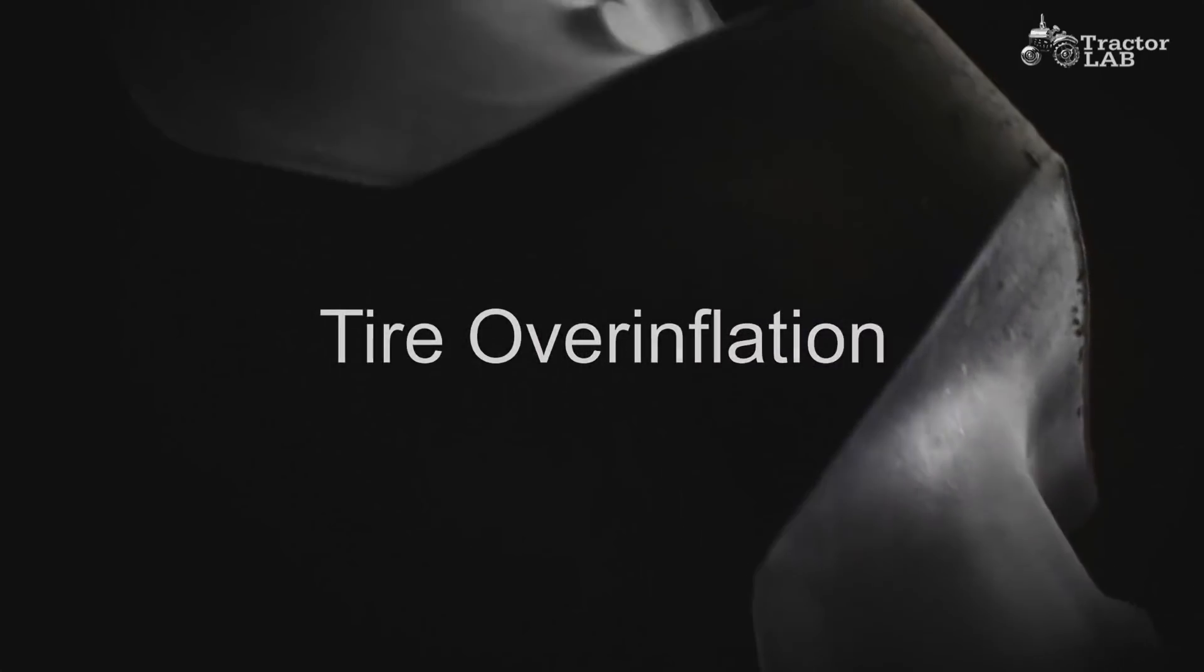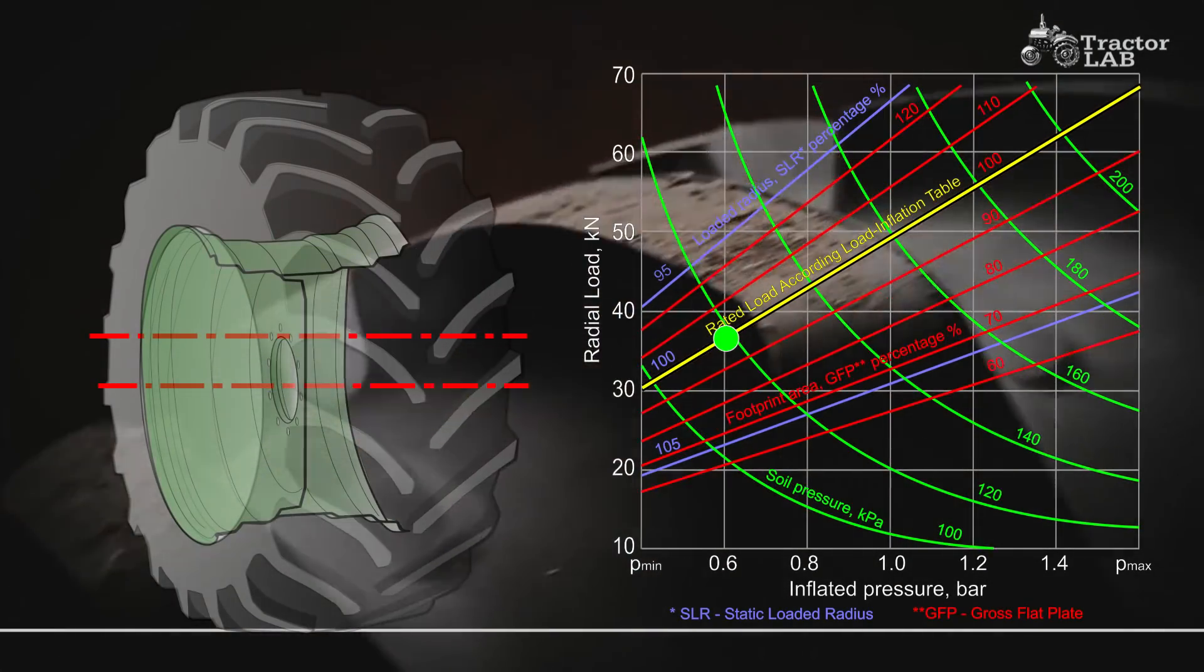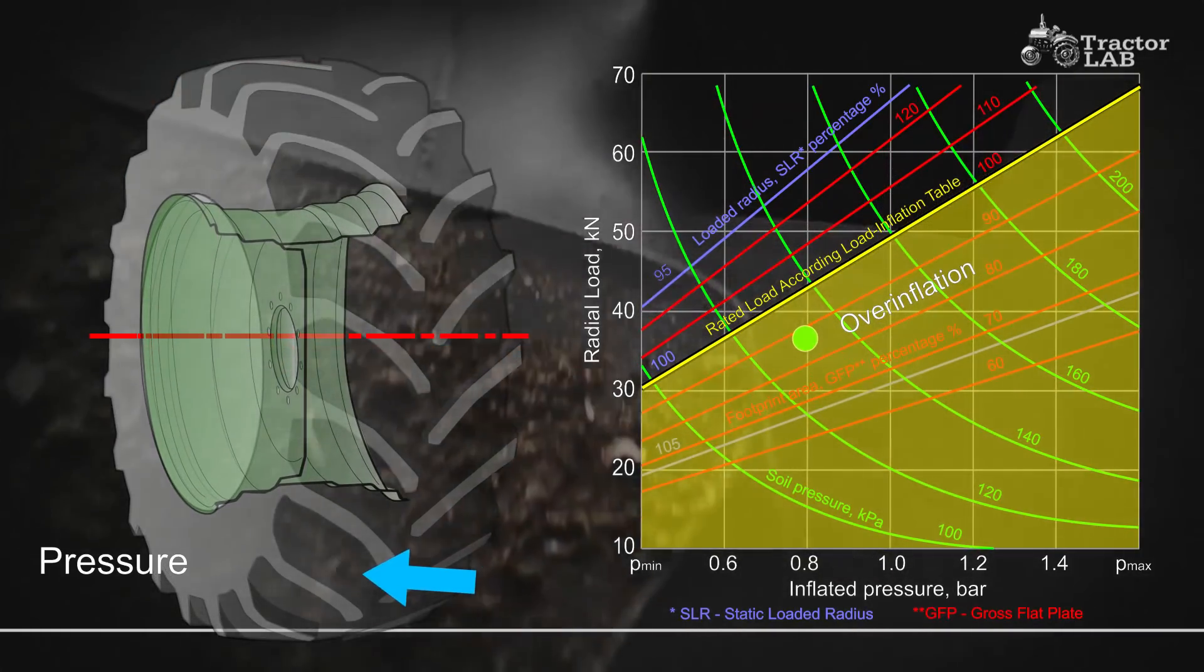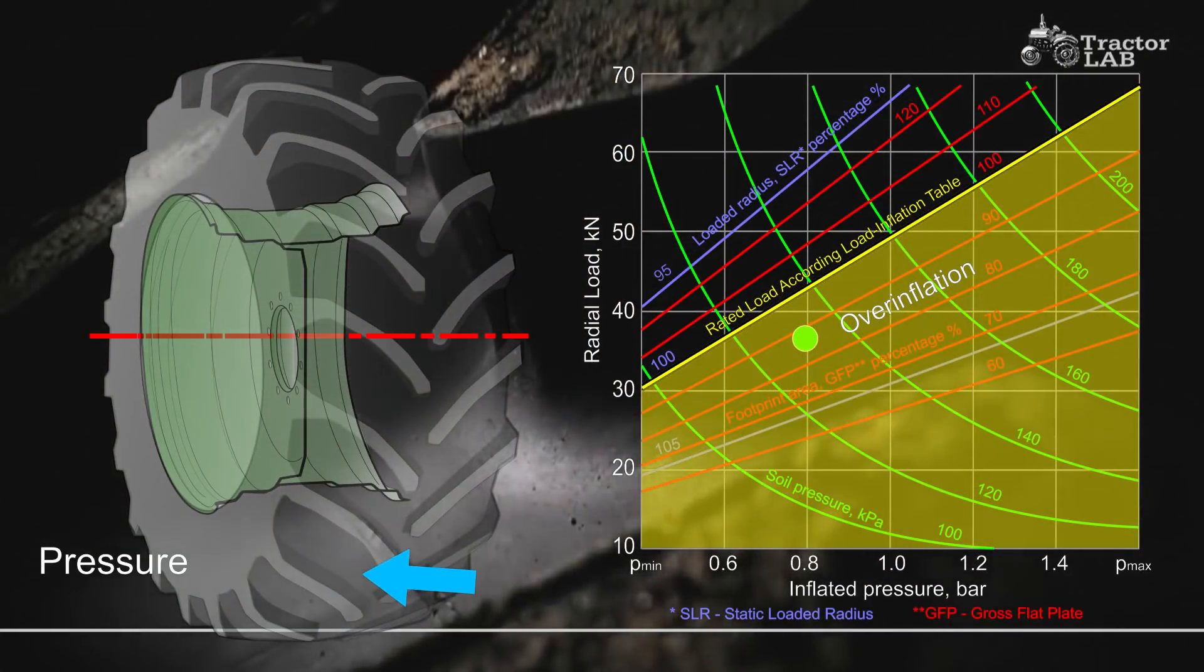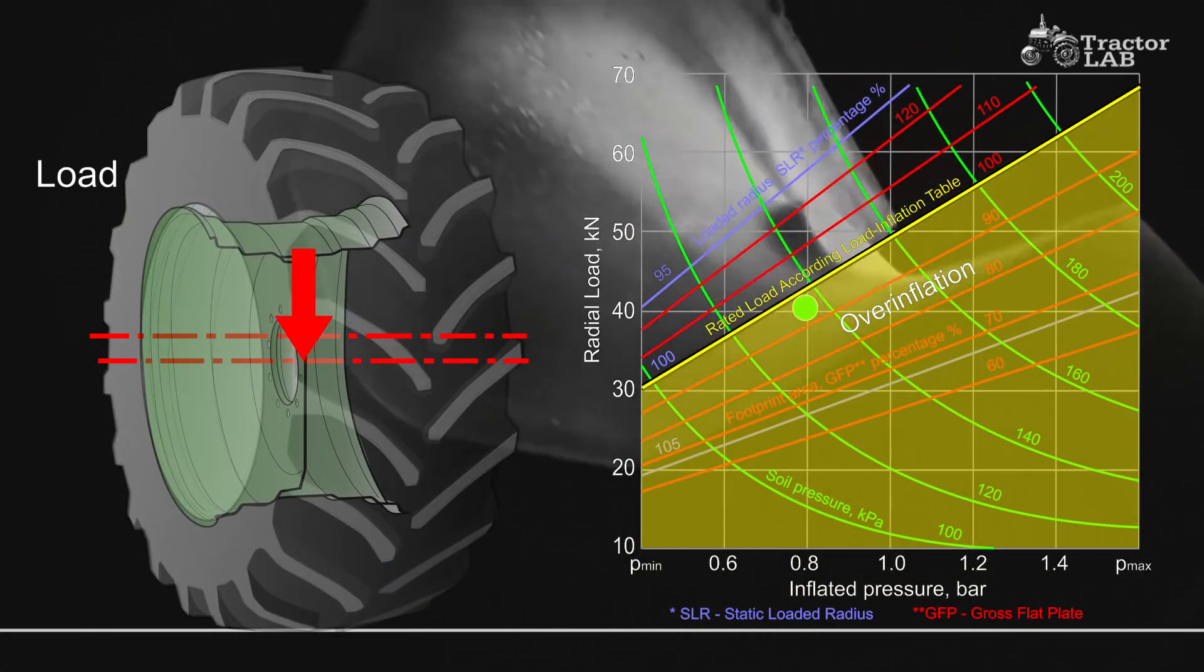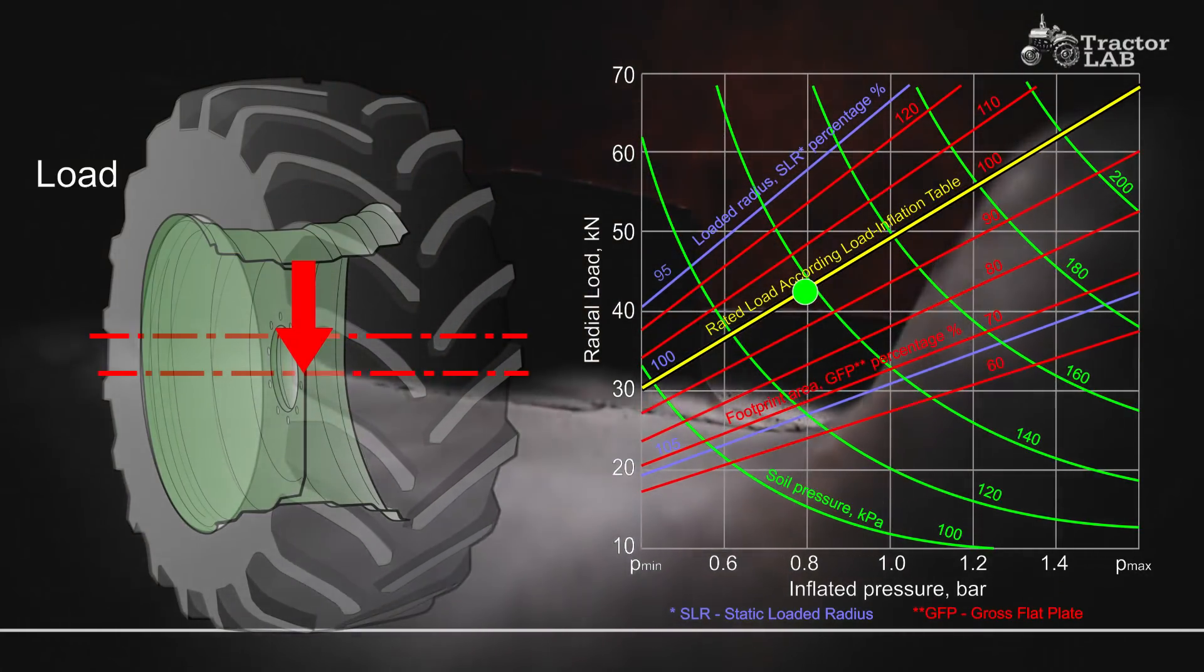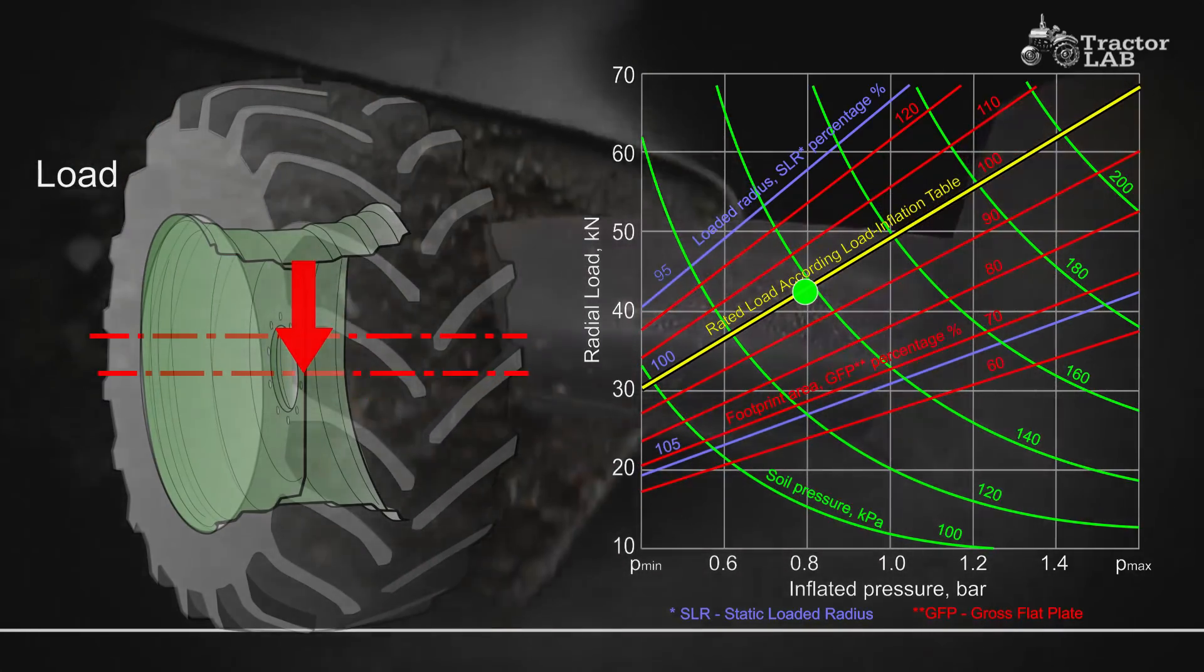Tire overinflation. Overinflation results in an under-deflected tire carcass. The tread is more rounded and wear is concentrated at the center. Traction is reduced in high torque service because both width and length of the ground contact area are reduced. The harder carcass with reduced flexing characteristics does not work as efficiently. Moreover, the tightly stretched overinflated carcass is more subject to weather checking and impact breaks.